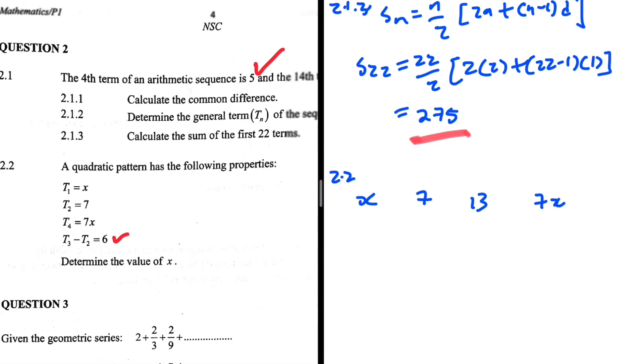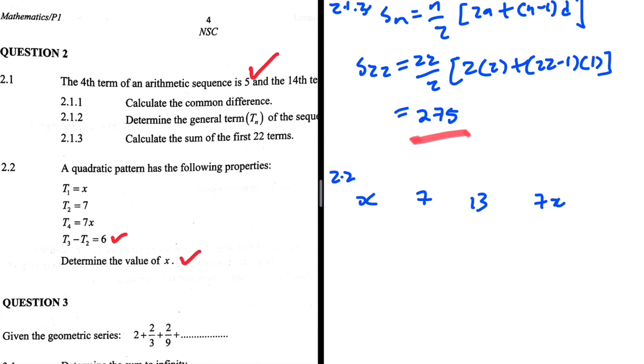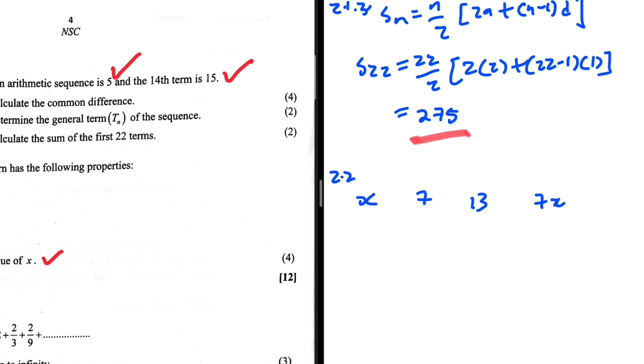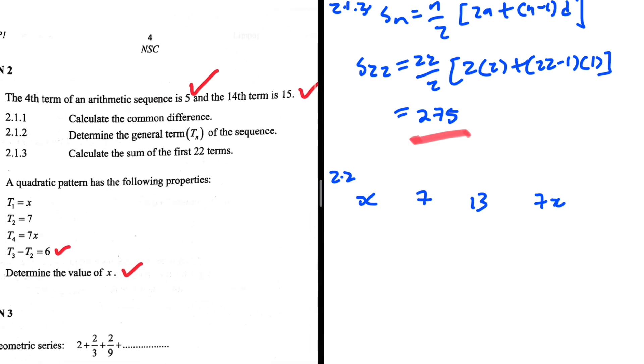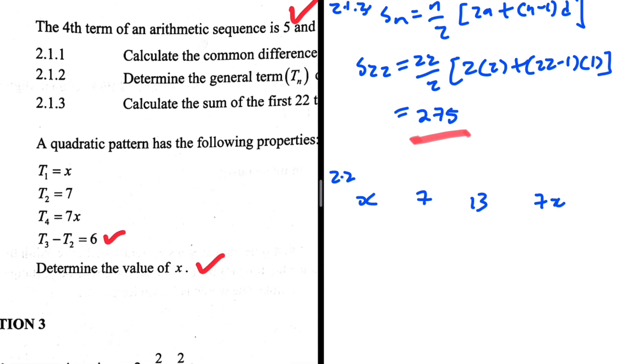So this is what we have. The question says find the value of x. Well, we know that the difference here will be 7 minus x. The difference here obviously is 6, and here we have 7x minus 13.